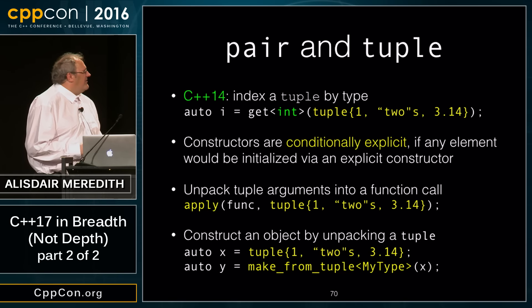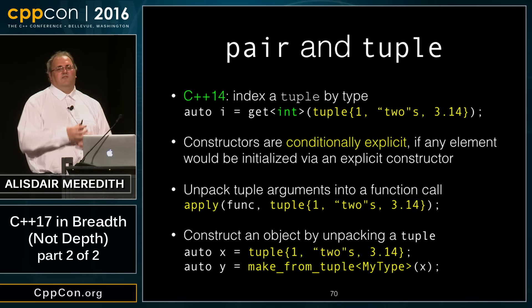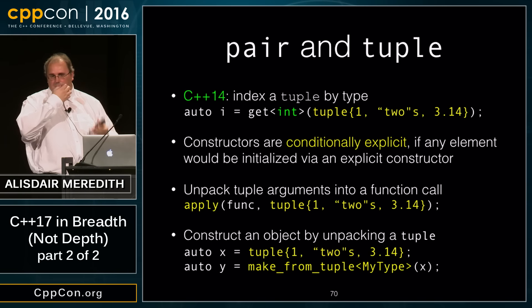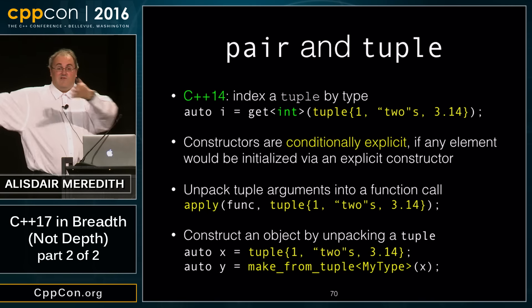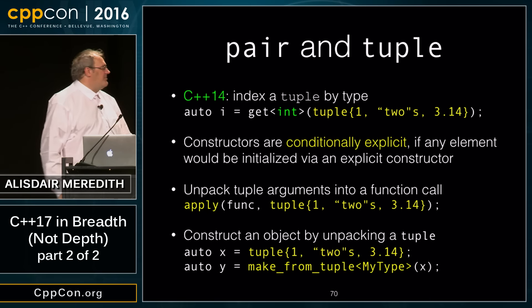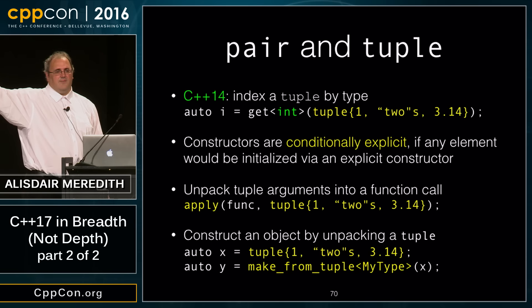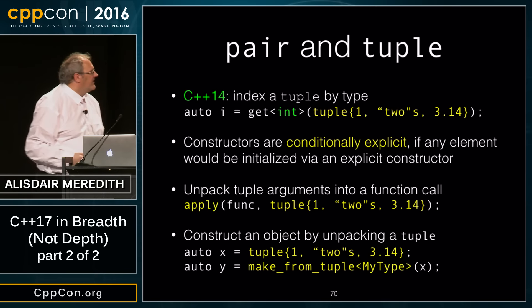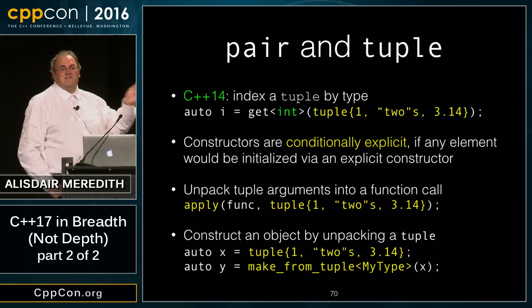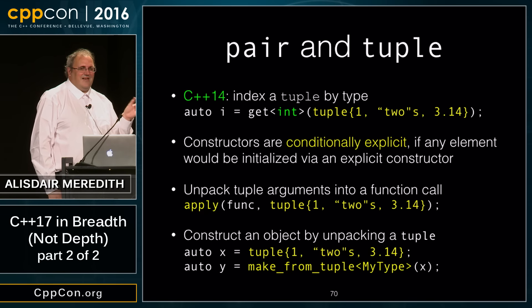We can now also go the other way: we've had the ability to pack function arguments into a tuple with make_tuple, but couldn't unpack them into a function call. Now we have std::apply: given a function and a tuple of arguments, it unpacks the tuple and calls the function. The example of this was actually sitting in the C++14 standard as an illustration — that exact example is now the library definition.